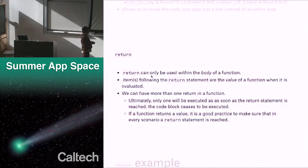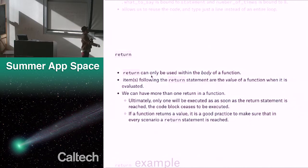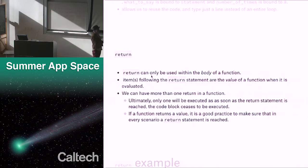Return is something special to functions only — it can only be used within the body of a function. Any items following the return statement are the value of a function when it's evaluated. You can have more than one return in a function, but as soon as you reach one, the function is over. If a function returns a value, it's good practice to make sure that every single scenario returns something — you don't want five out of six branches to return something and one to return nothing, because that's very confusing.